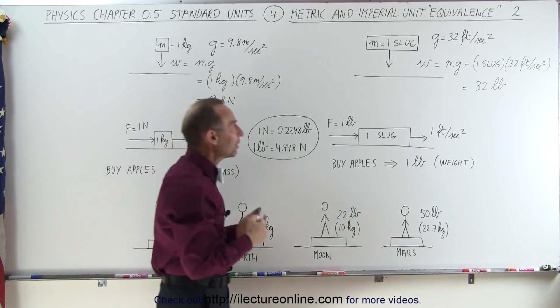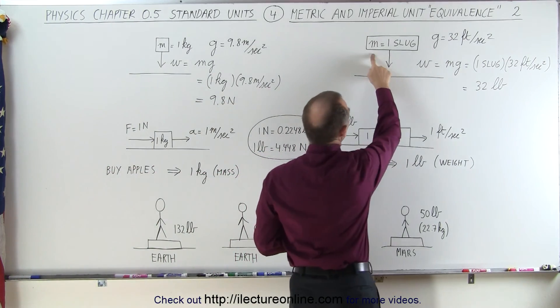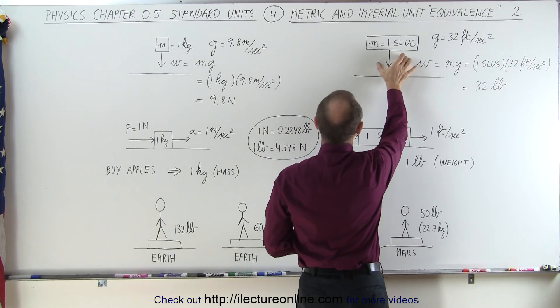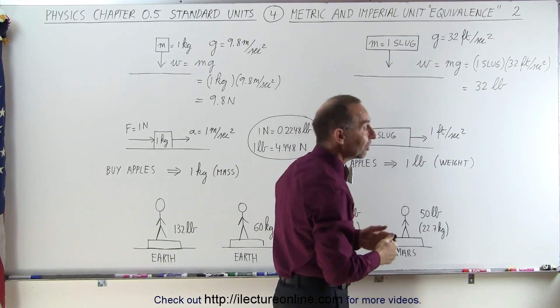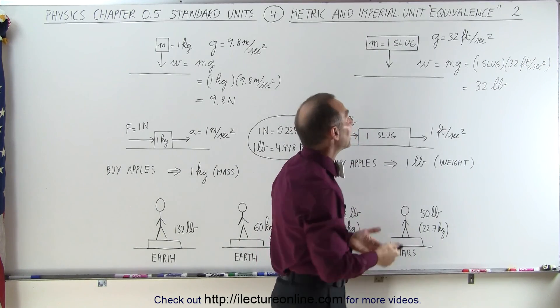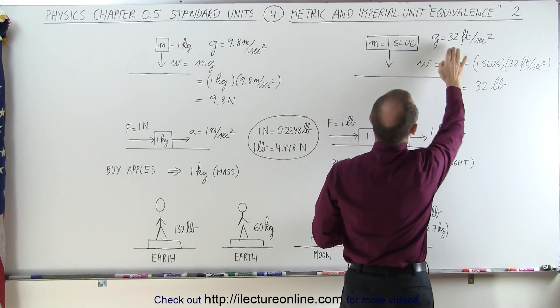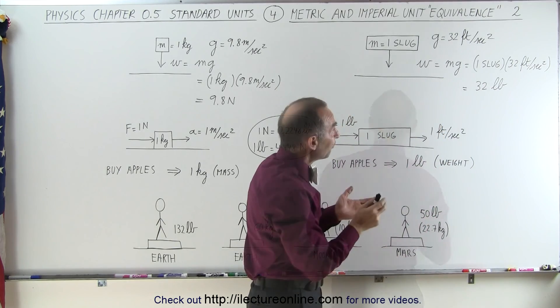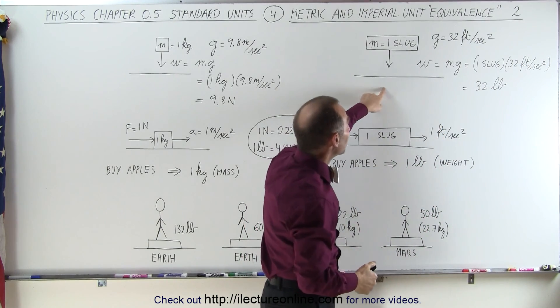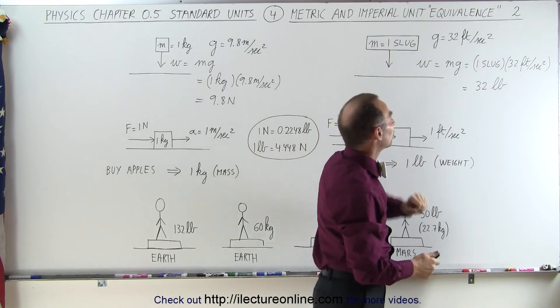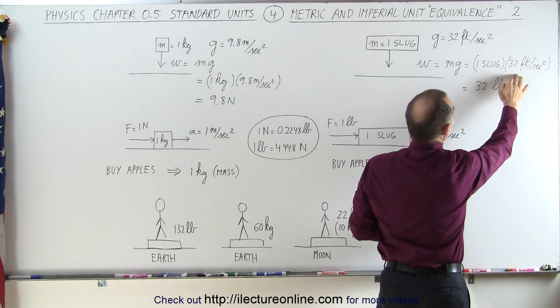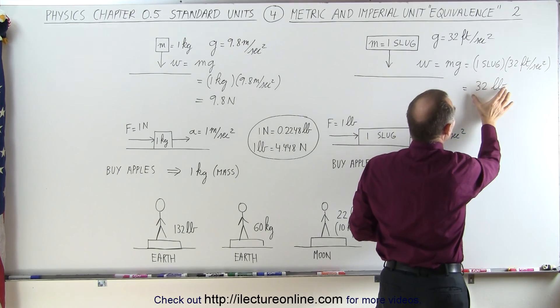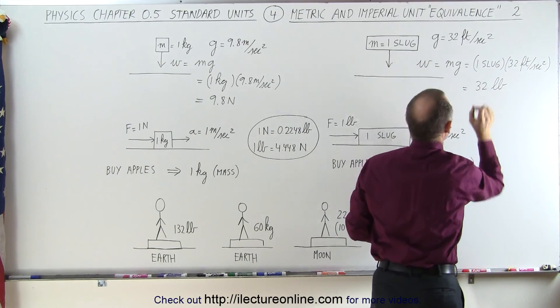In the imperial units, the mass is expressed in terms of slugs. Now, one slug is a greater mass than the mass of 1 kilogram, and the acceleration due to gravity in imperial units is 32 feet per second squared. So therefore, the weight of the object is simply equal to the mass times acceleration due to gravity, which means it is equal to 1 slug times 32 feet per second squared, which means the weight of that object is 32 pounds.